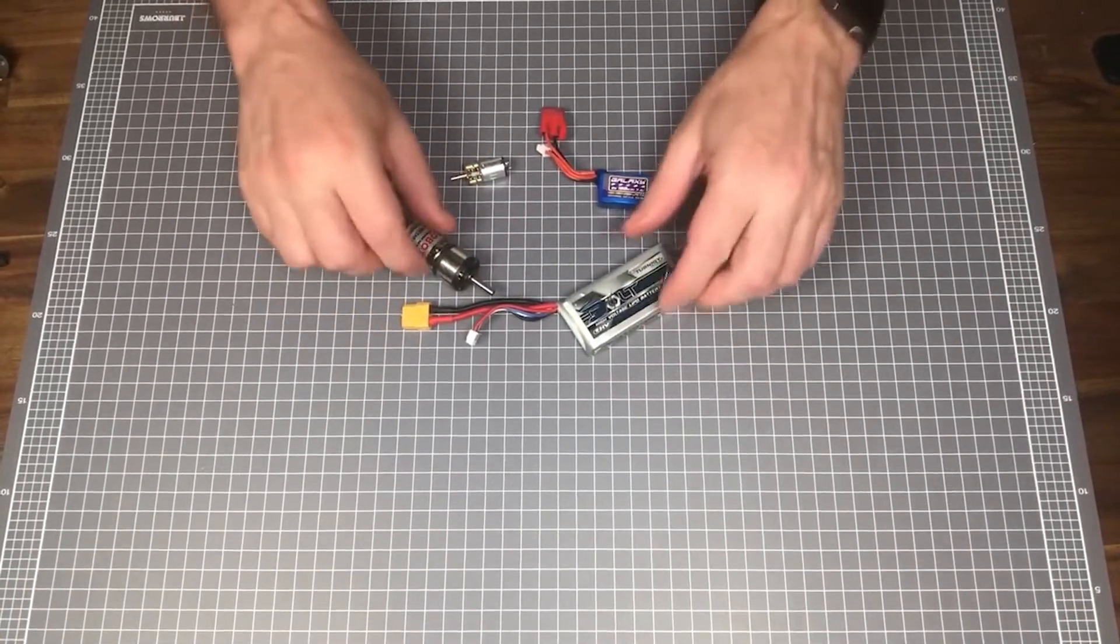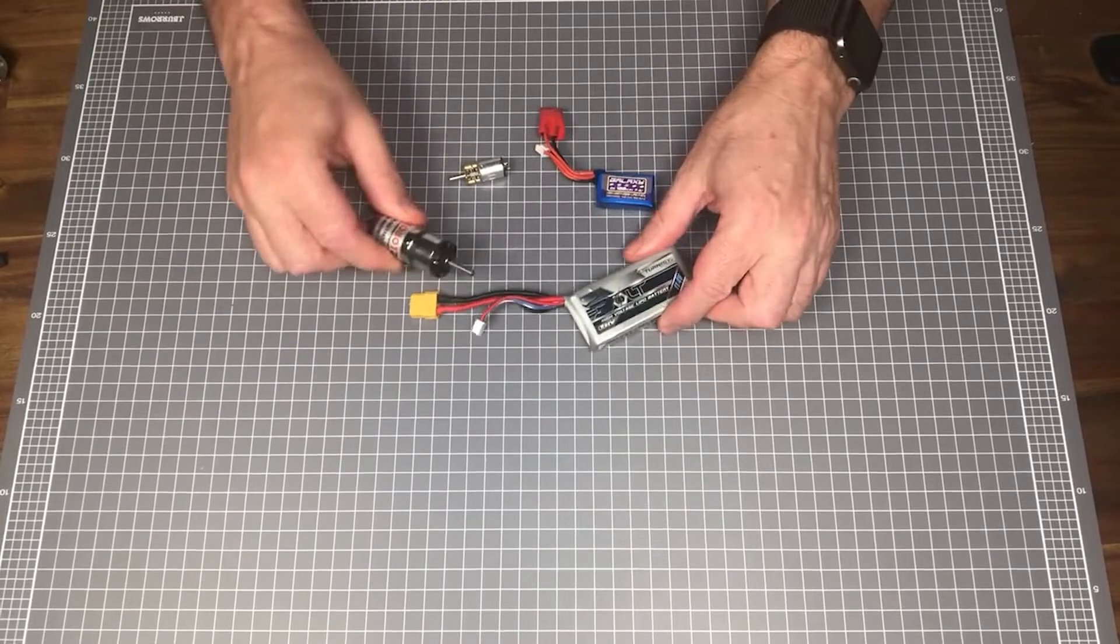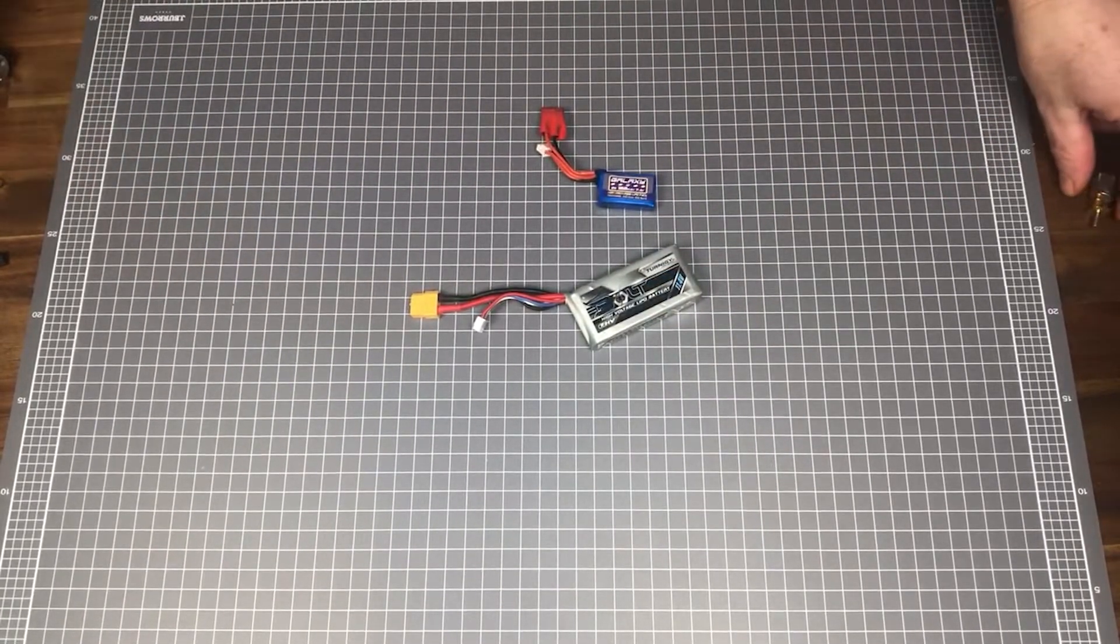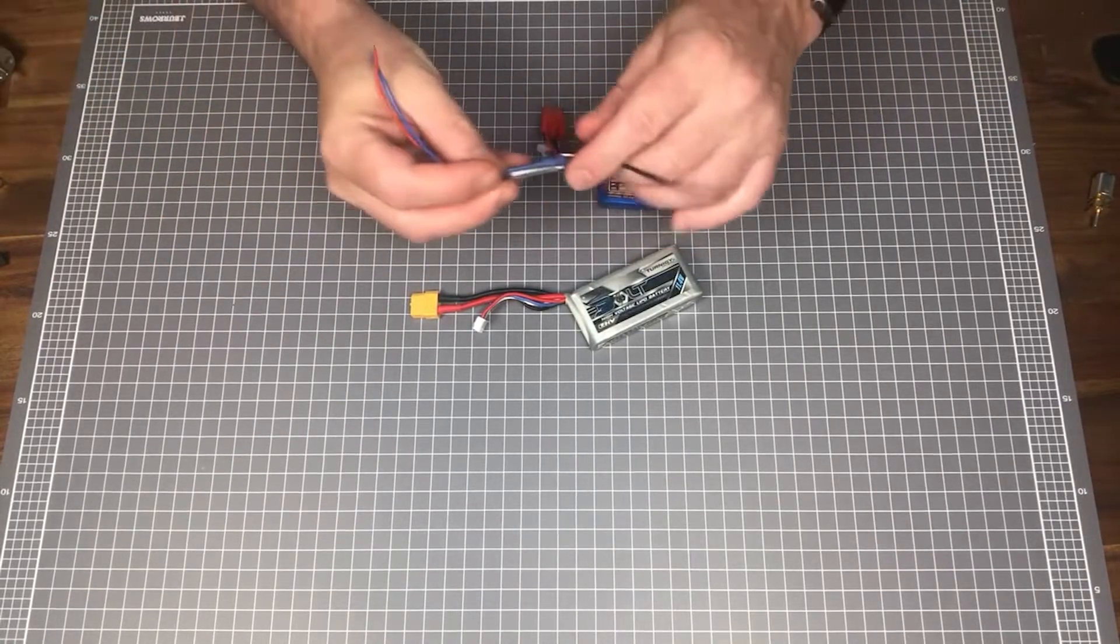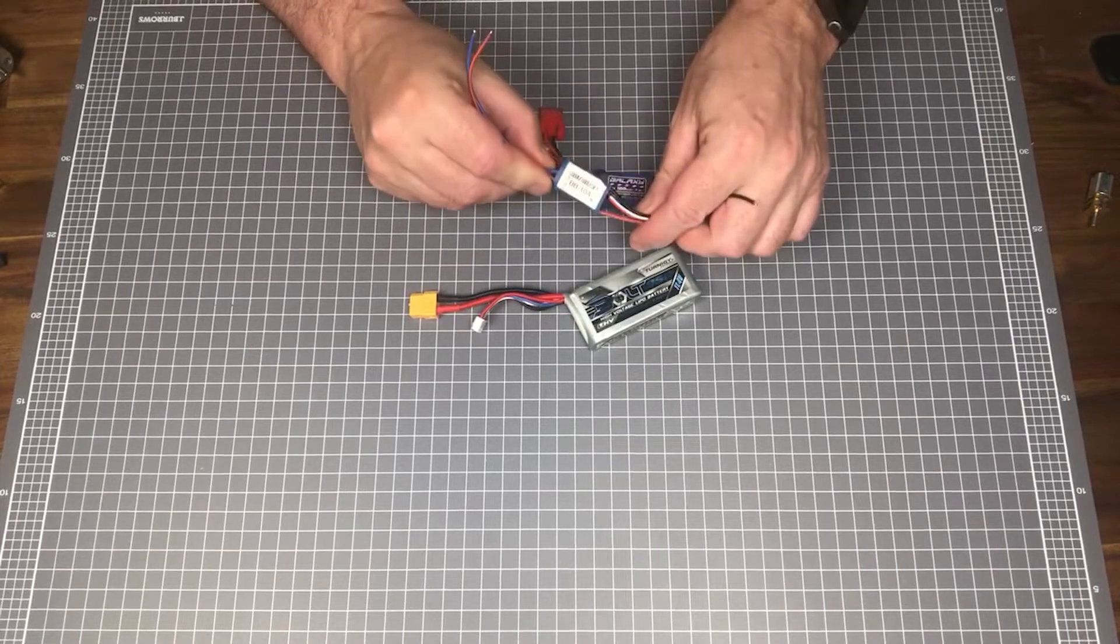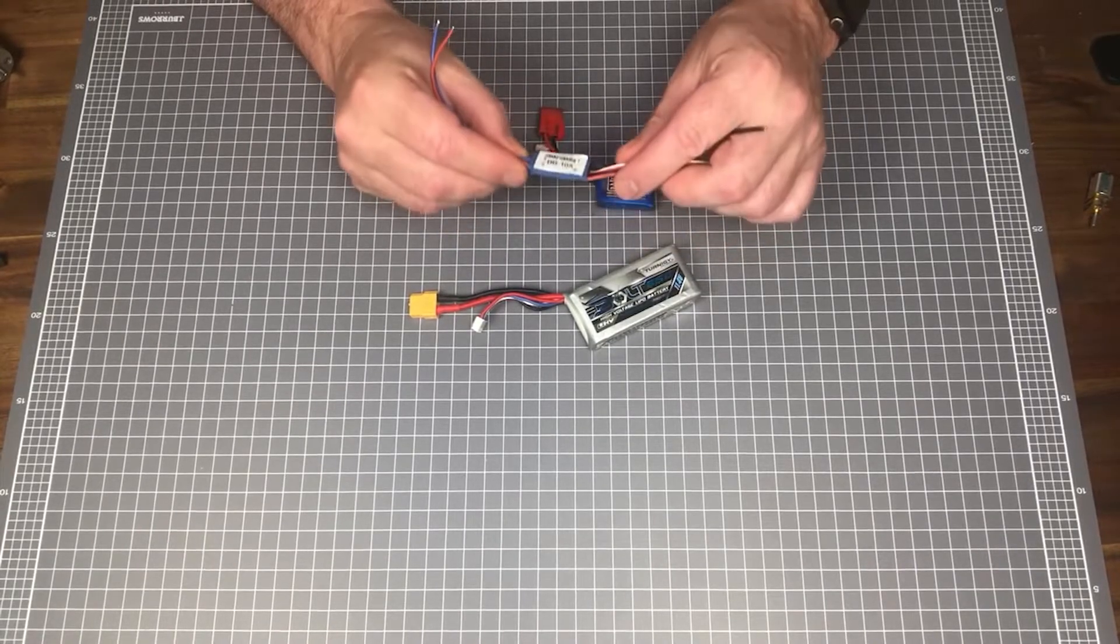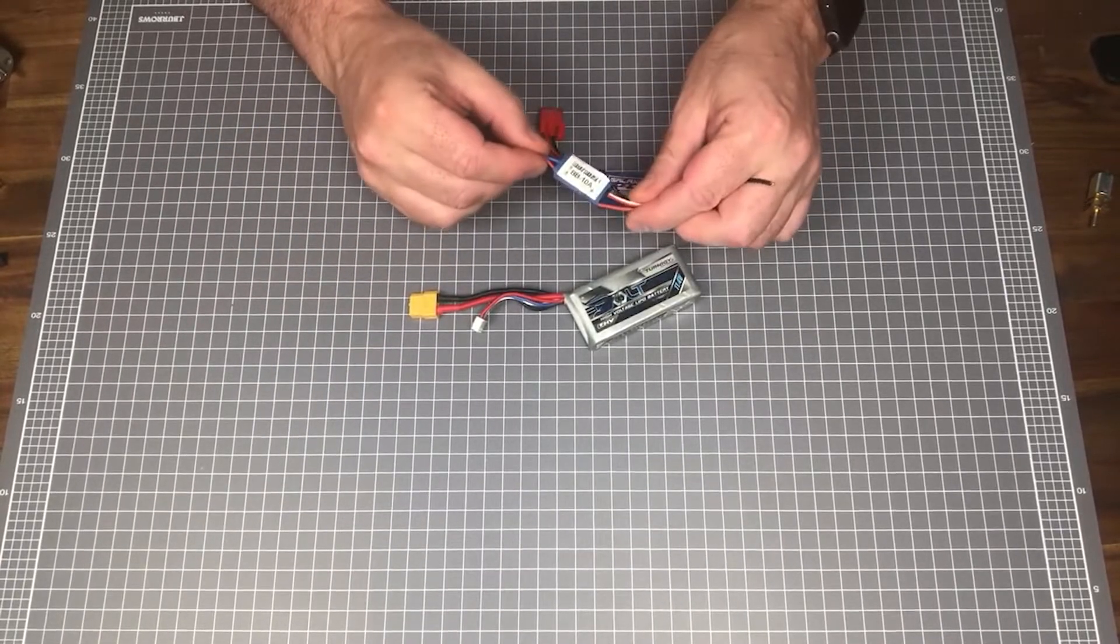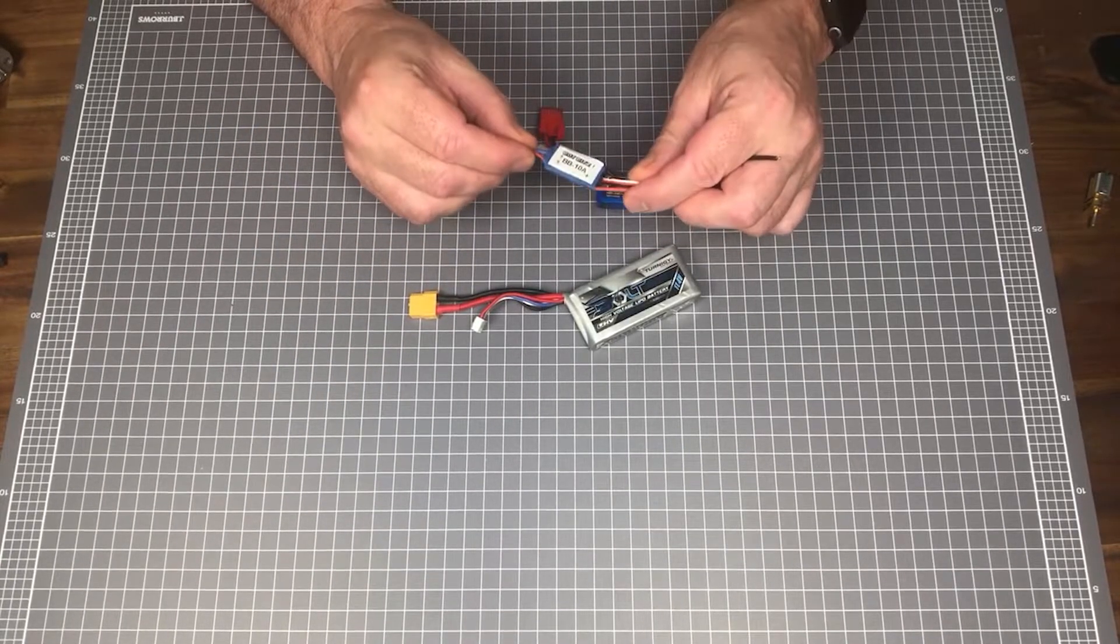When sourcing a motor, keep note of the stall current, or max current, as the ESC or electronic speed controller will need to be able to cater for this. If the stall current for the motor is 7 amps, then an ESC to control that motor would need to cater for the 7 amps plus maybe a little wiggle room, which means the selected ESC would likely be around 10 amps.